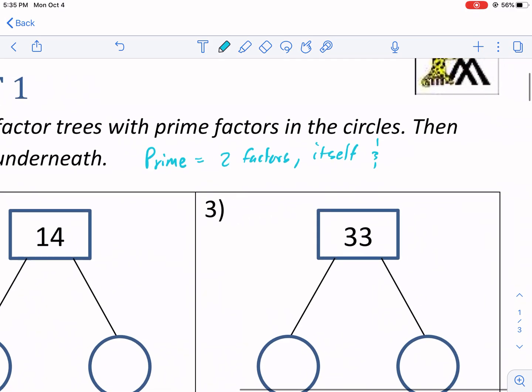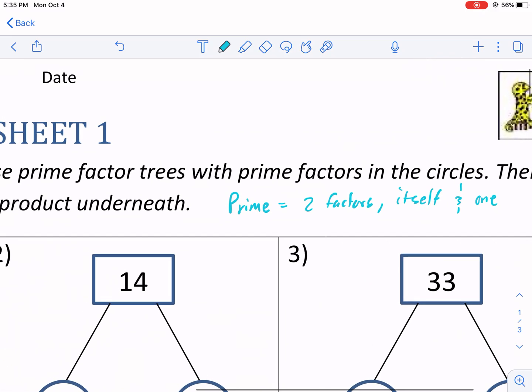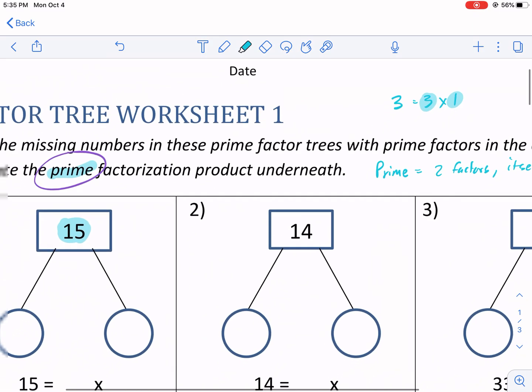So in this case, let's take the number three. Three is a prime number, because the only combination you can get to three is three times one, itself and one. So it's a prime number.